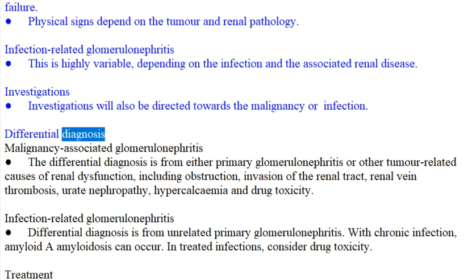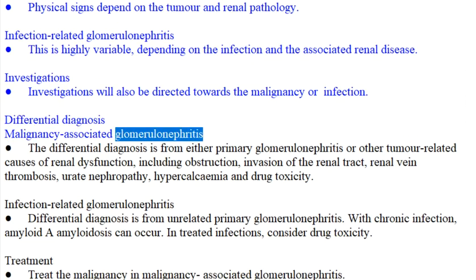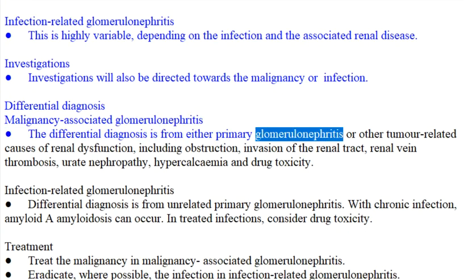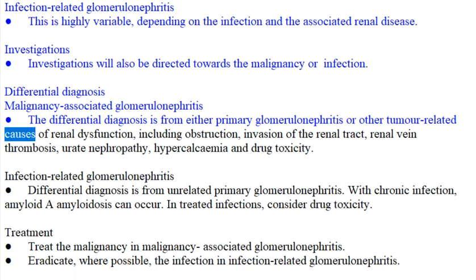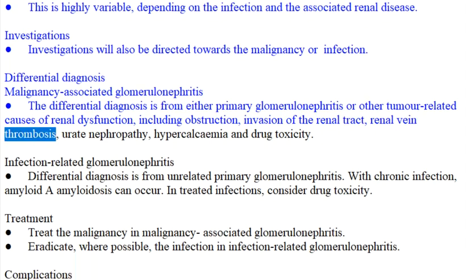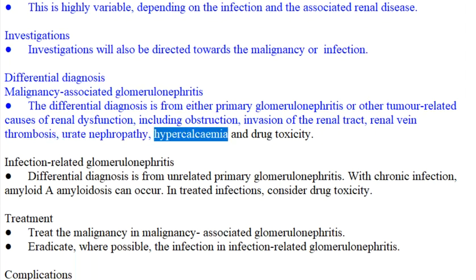Differential diagnosis. Malignancy-associated glomerulonephritis: the differential diagnosis is from either primary glomerulonephritis or other tumor-related causes of renal dysfunction, including obstruction, invasion of the renal tract, renal vein thrombosis, urate nephropathy, hypercalcemia, and drug toxicity.